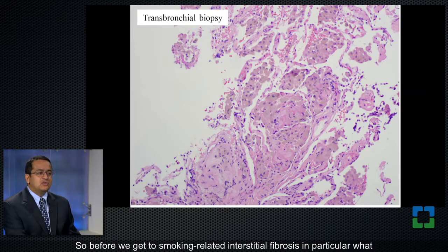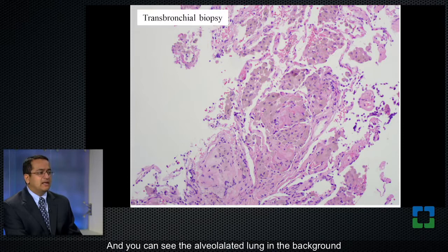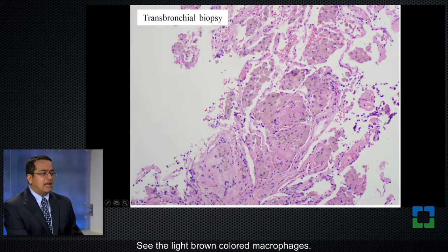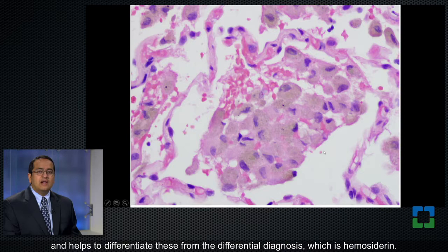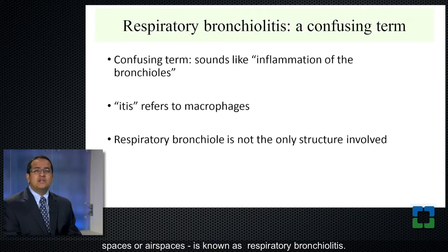Before we get to smoking-related interstitial fibrosis in particular, you should understand the concept of respiratory bronchiolitis. Here I'm showing you an image from a transbronchial biopsy. You can see the alveolated lung in the background — here's the alveolar septum, and within the airspaces are all these pigmented macrophages. You see the light brown colored macrophages. At higher magnification, these macrophages have this light brown pigment in their cytoplasm and an occasional dark black speck. The dark black specks are a very important clue as to what's going on and help to differentiate these from the differential diagnosis, which is hemosiderin. This finding — these lightly pigmented macrophages within the alveolar spaces — is known as respiratory bronchiolitis.